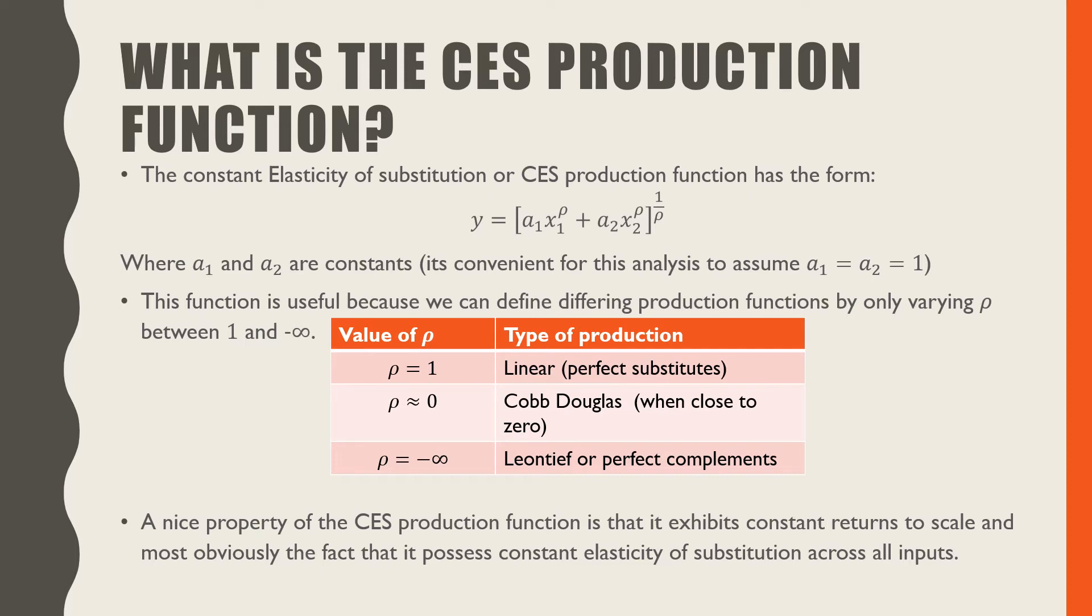This function is useful because we can define differing production functions by varying only one parameter, that being rho, between 1 and negative infinity.